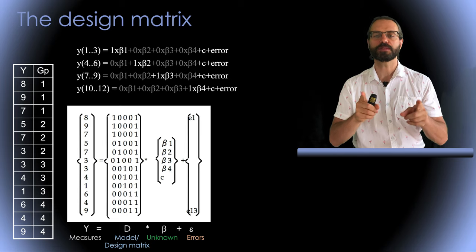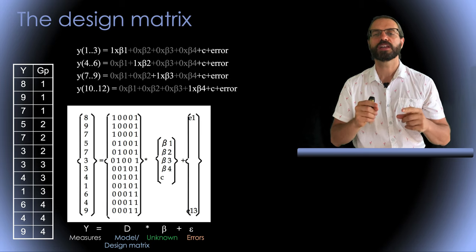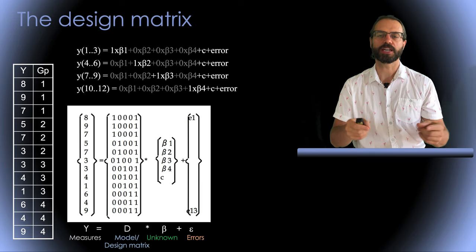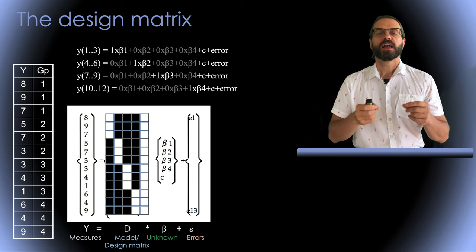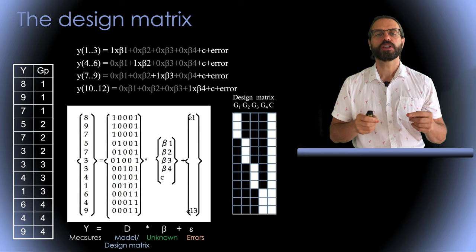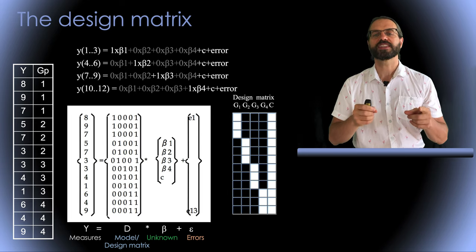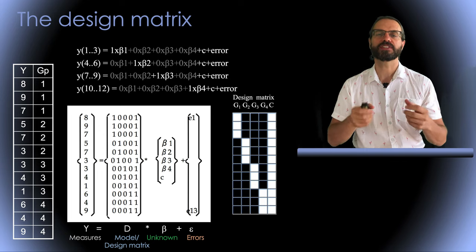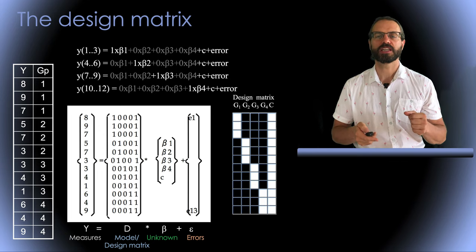We can represent these 12 equations using matrix notation where we have a column vector representing the result which is equal to the design matrix containing 0 and 1 multiplied by a vector of beta parameters plus some error. The design matrix is often represented by this type of checkerboard where we encode ones as white cells and zeros as black cells and you'll often see this type of representation in the literature.